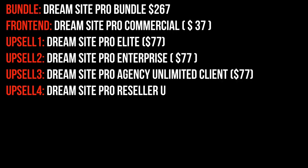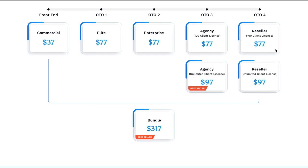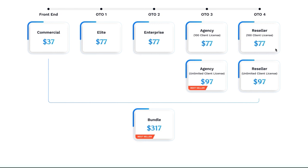You can find all the OTO links in my review. The link is in the description box. OTO 1 lets you create unlimited websites, upgraded features, and additional themes. OTO 2 enterprise: add unlimited trained chatbots on any website, auto pop-up lead forms, and much more. OTO 3 agency: pro agency theme and serve unlimited clients. OTO 4 reseller: resell DreamSite Pro for 100% profit without the hassle of product creation or marketing.